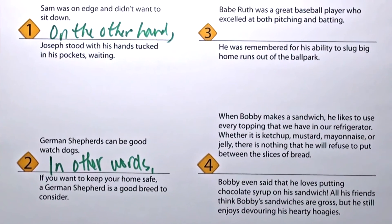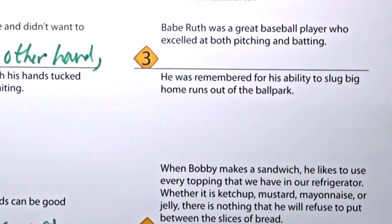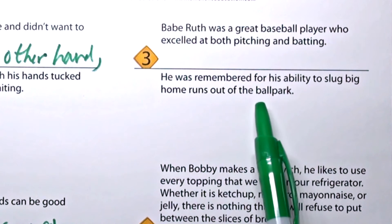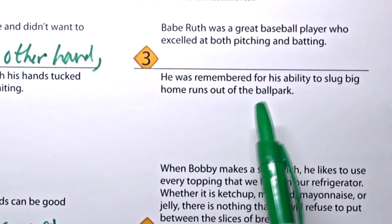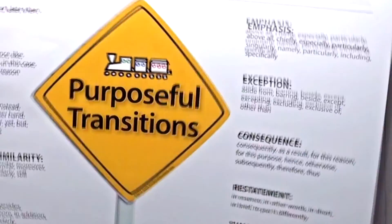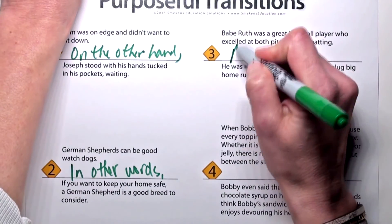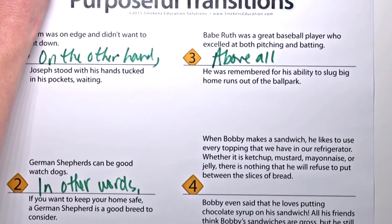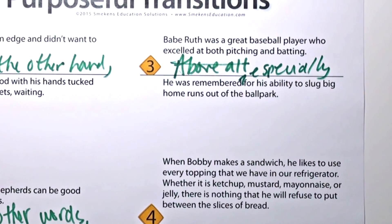Let's look at this third example. Babe Ruth was a great baseball player who excelled at both pitching and batting. Next sentence: he was remembered for his ability to slug big home runs out of the ballpark. That's about batting — extra emphasis. So I'm thinking I should choose one of those: 'Above all, he was remembered for his ability to slug big home runs out of the park.' Or maybe I say: 'He was remembered especially for his ability to slug big home runs out of the ballpark.' Plan to model multiple variations for the same connection.